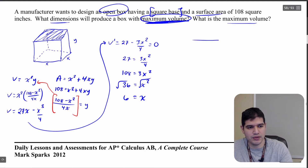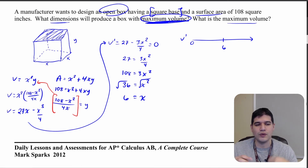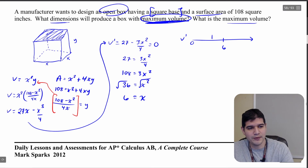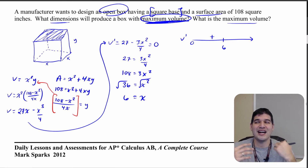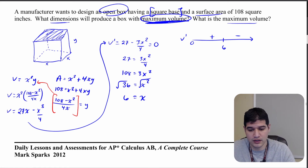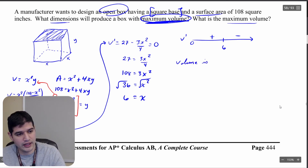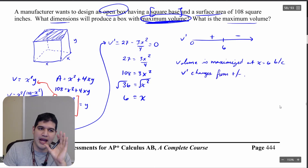Now we need to confirm with the sign chart. Going from zero to infinity, with X = 6 as the critical value: plugging in X = 1 gives 27 − 3/4, which is positive. Plugging in X = 100, we get 27 minus a very large number, which is negative. So we can say that volume is maximized at X = 6 because V′ changes from positive to negative.